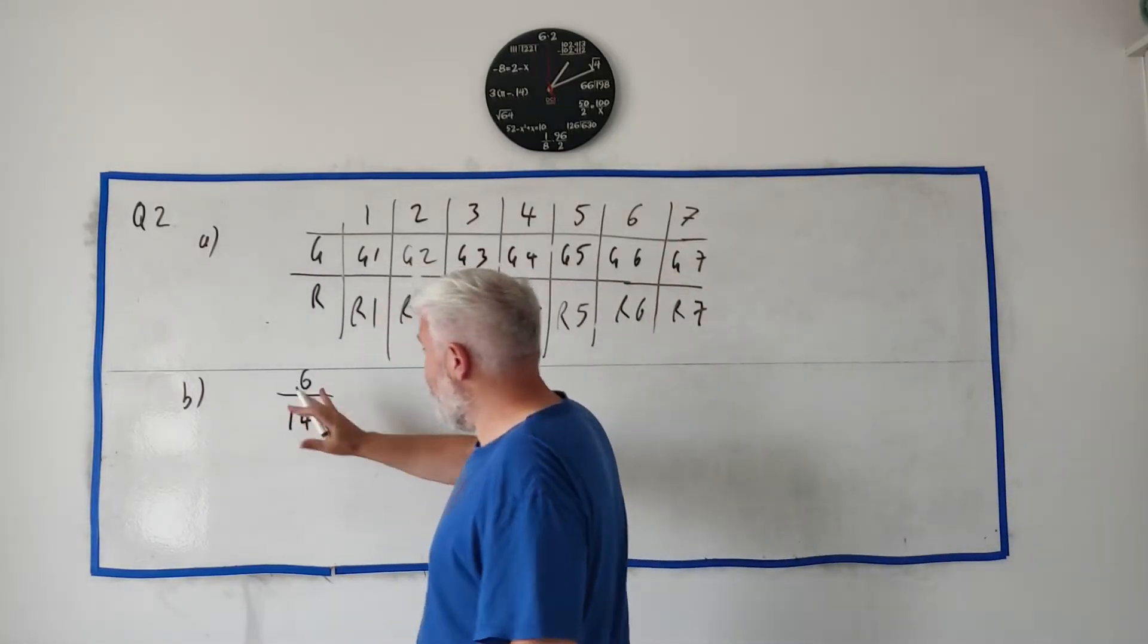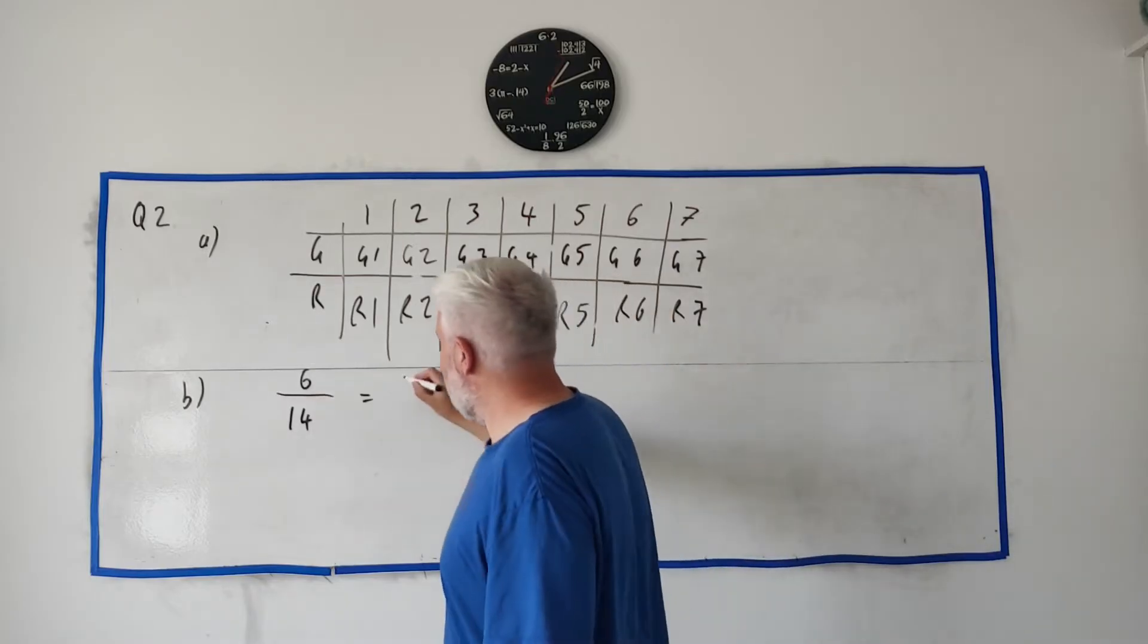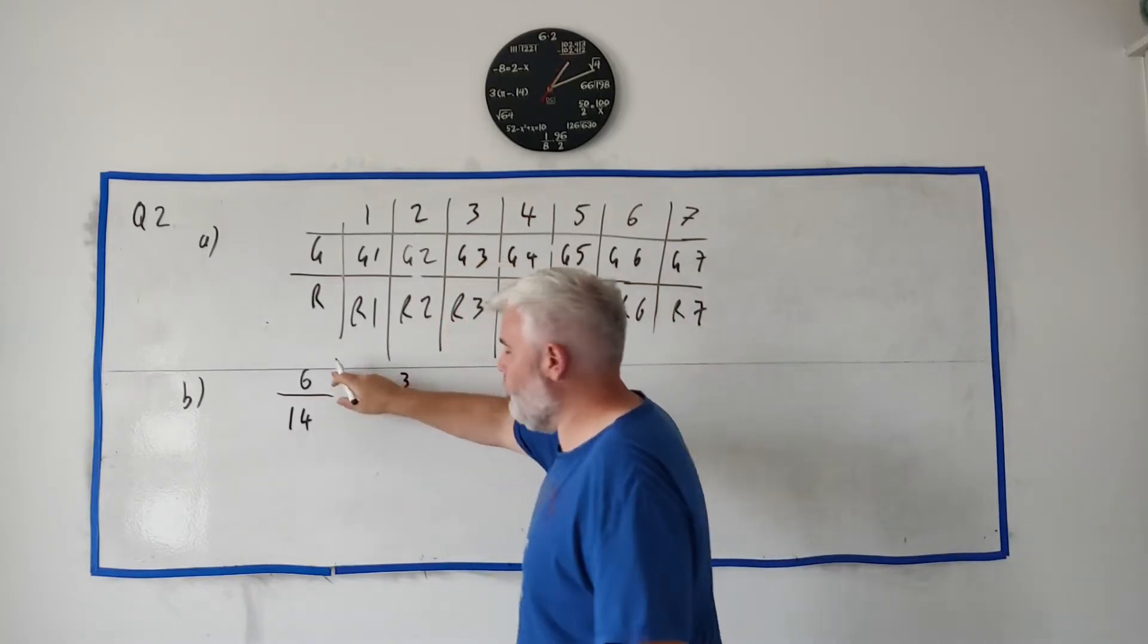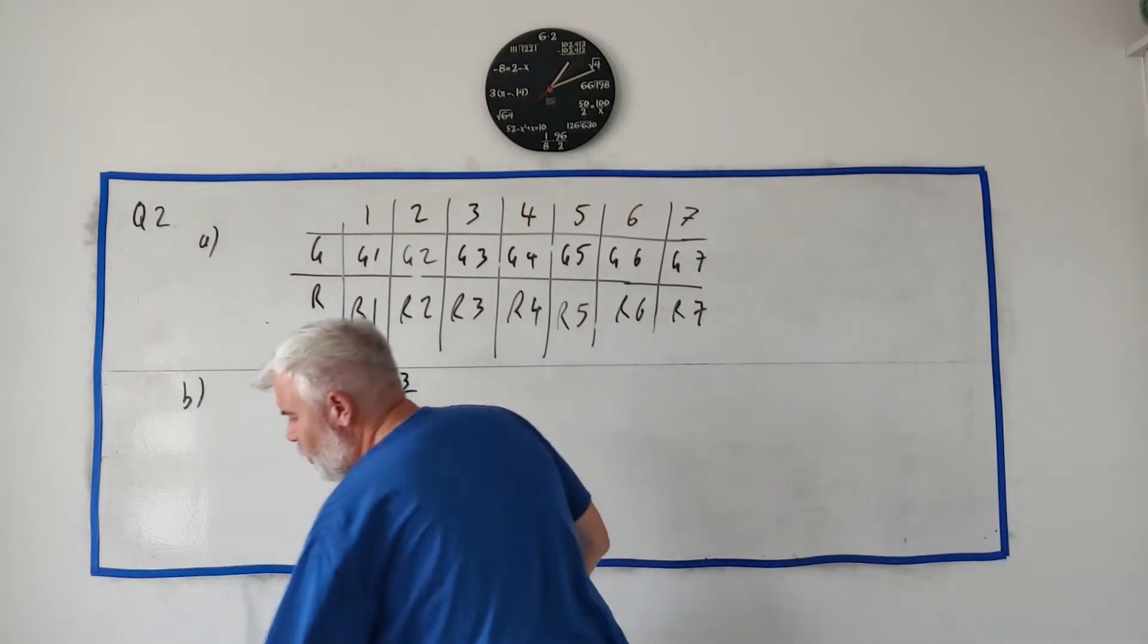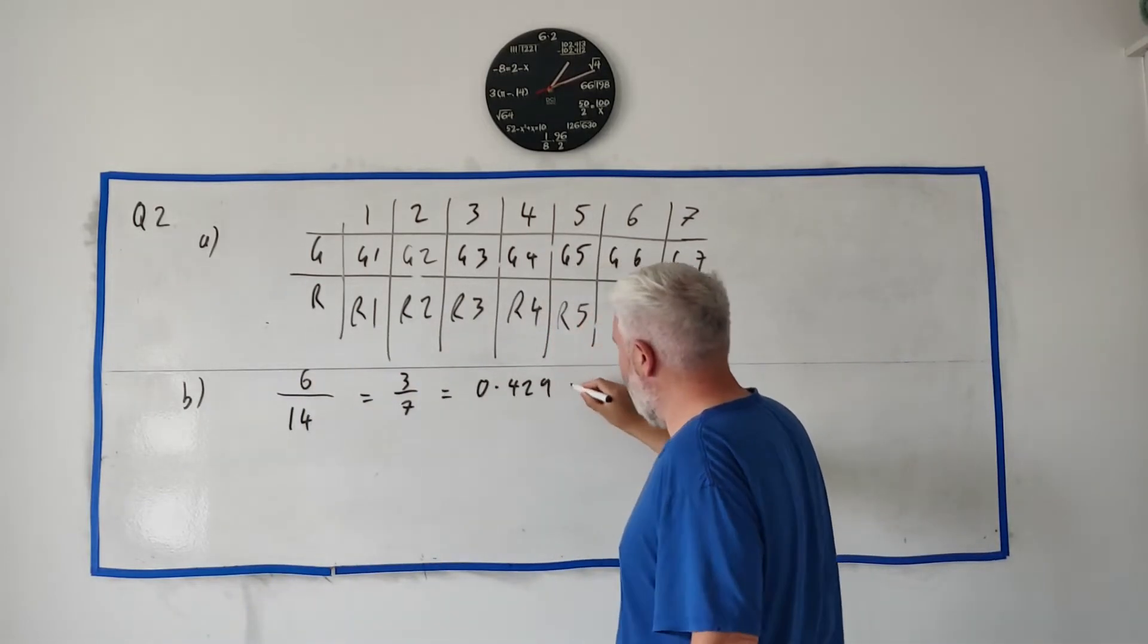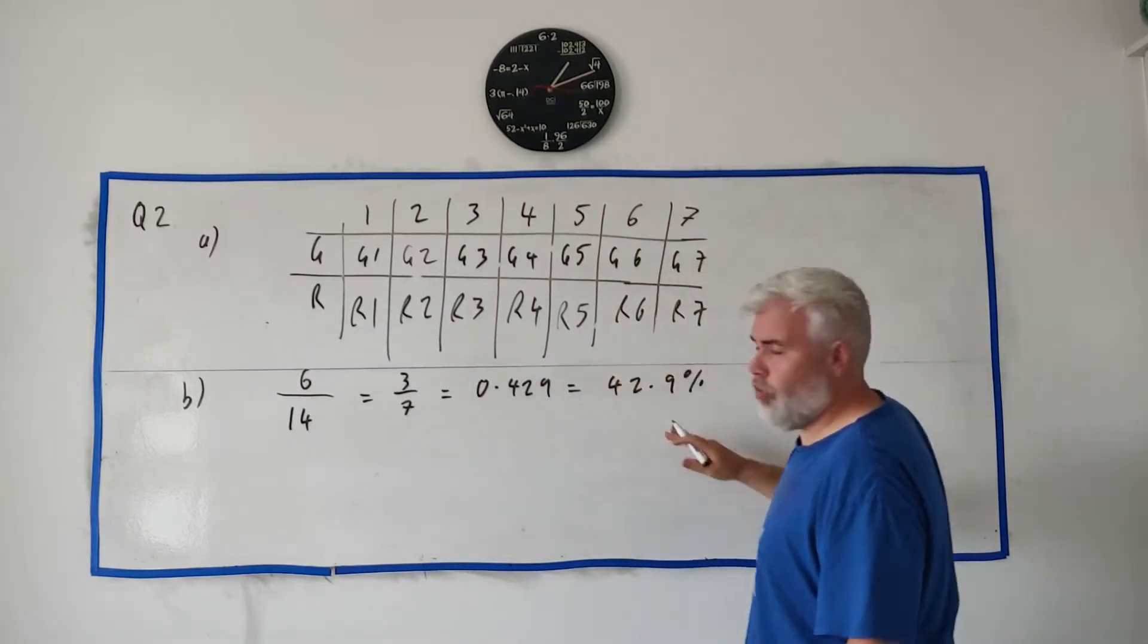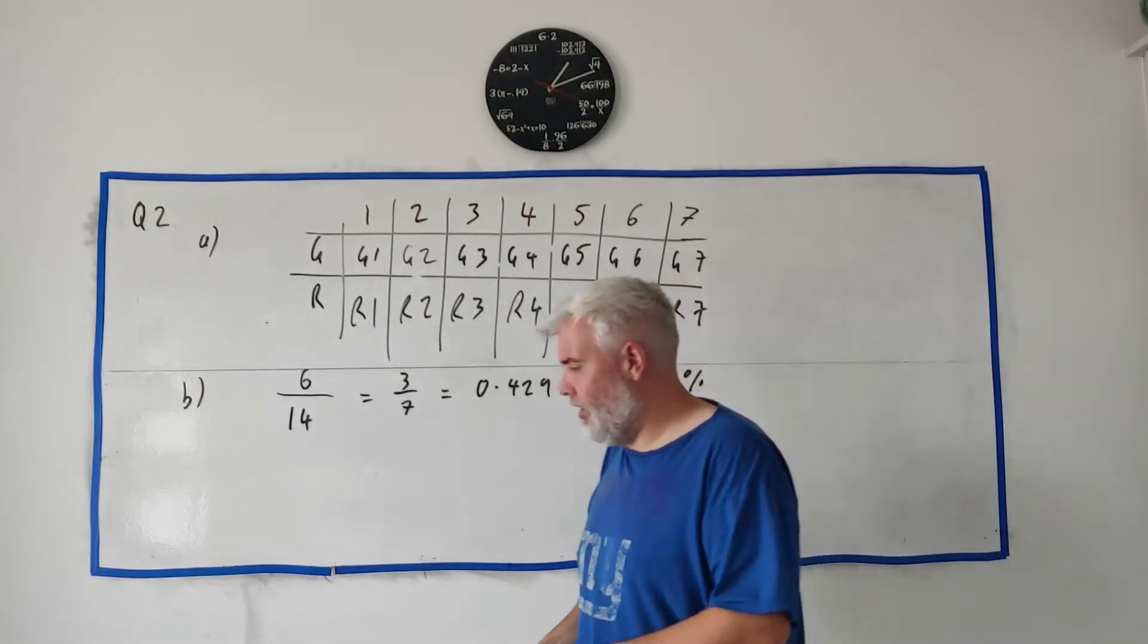You might lose a mark for that because you can make that smaller—that's the same as 3/7 (2 goes into both of them). You could also write this as 0.429 or 42.9%. All three of these should be full marks; they don't tell you how they want the answers.